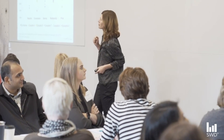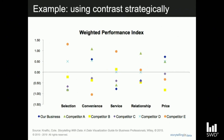Let's take a step back and see what we've got going on here. This is an example where we're looking at some survey data, aggregating into a weighted performance index — a summary metric we want to compare along different categories listed along the bottom: selection, convenience, service, relationship, price. We have that data for our business, denoted by the blue diamond, as well as a number of our competitors, denoted by the other colored shapes.